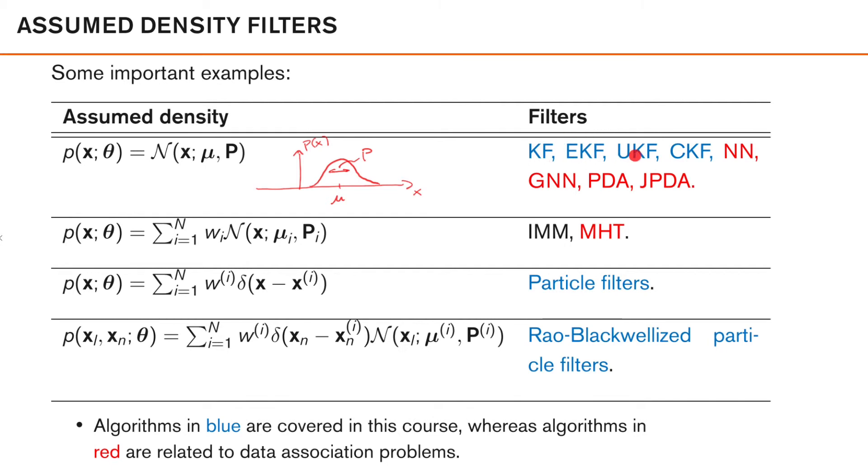We also study the unscented Kalman filter and the cubature Kalman filter in this course. There are also filters that use this parameterization to solve the object tracking problem, that is, when we have data association uncertainty, namely the nearest neighbor, the global nearest neighbor, probabilistic data association, and joint probabilistic data association. We will not cover these methods in this course, but the filtering algorithms that we study here is also the basis for these methods.